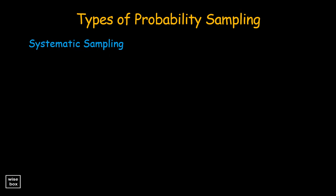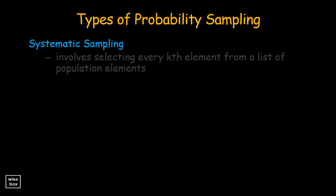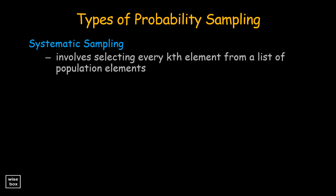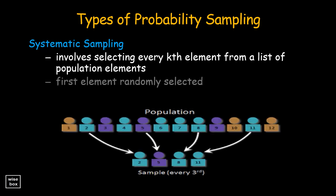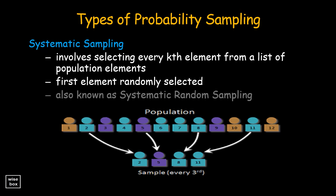Systematic sampling is a probability sampling procedure that involves selecting every kth element from a list of population elements, after the first element has been randomly selected. It is also referred to as systematic random sampling.